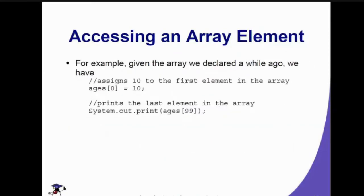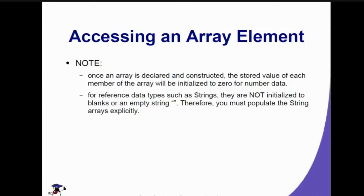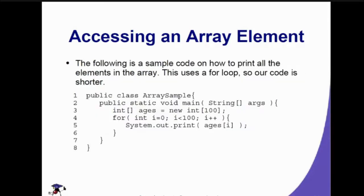For example, given the declared array, ages[0] is equal to 10 — and to print it out, we use ages with a specific index. Once an array is declared and constructed, the stored value of each member will be initialized to 0 for numeric data types. For reference data types such as strings, they are not initialized to blanks or any empty string, so you must populate string arrays explicitly.